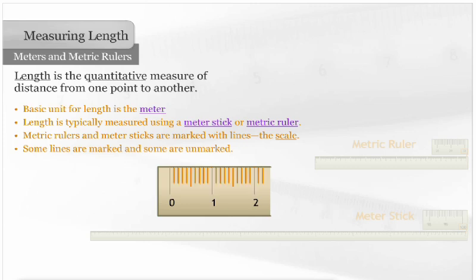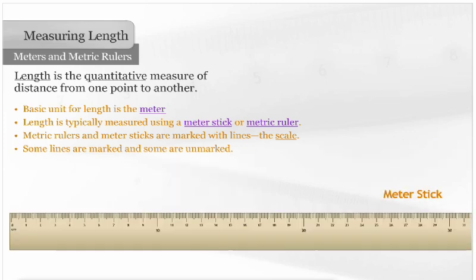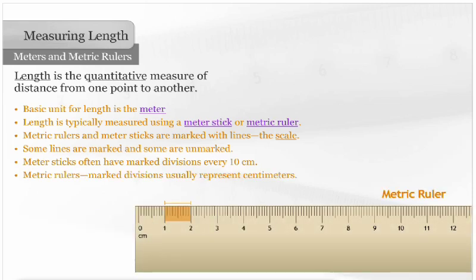Some of the lines are marked and some are unmarked. Meter sticks often have marked divisions every 10 centimeters. On metric rulers, the marked divisions usually represent centimeters. The unmarked divisions divide each centimeter into 10 equal parts. Each of these smaller divisions is equal to 1 millimeter. 10 millimeters equals 1 centimeter.